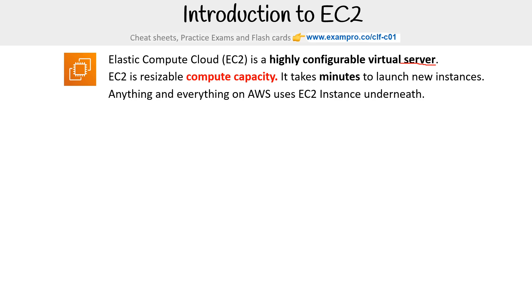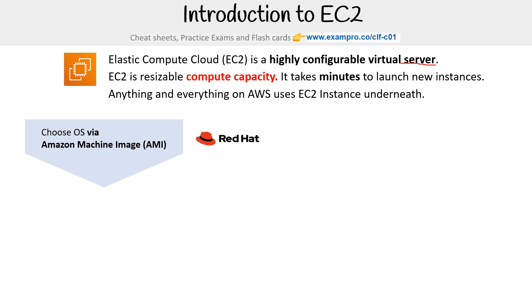You're going to have to choose a few options. The first thing you'll need to do is choose your OS via your Amazon Machine Image. That's where you get Red Hat, Ubuntu, Windows, Amazon Linux, SUSE — it might also come with pre-installed libraries and things like that.